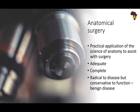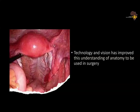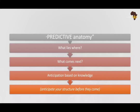Moving on — anatomical surgery. What is anatomical surgery? It is the use of anatomy to assist with surgery, to make sure we do complete and adequate surgery that is radical to the disease — in this case endometriosis — but conservative to the function of the visceral organs, being a benign disease. We also have predictive anatomy: not only should we be accurate, but we should know what lies where and what comes next before it appears. To anticipate structures before they appear is predictive anatomy, and when there is a distorted pelvis, predictive anatomy is what will get you to the end of that journey safely.